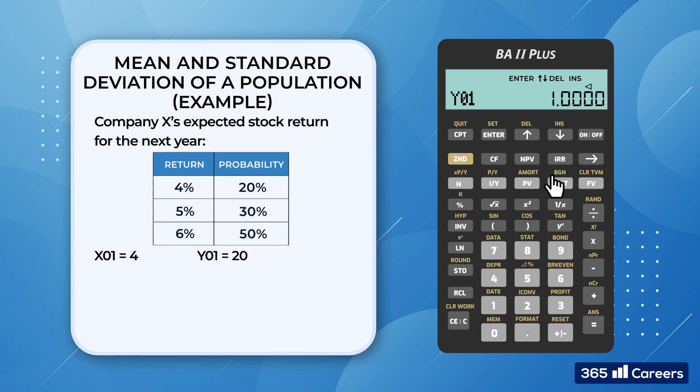So, let's type 20 for y01, and then continue scrolling down to x02, which is equal to 5. Its respective probability, y02, is 30. Finally, x03 equals 6, while y03 is 50.